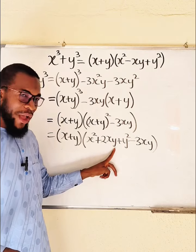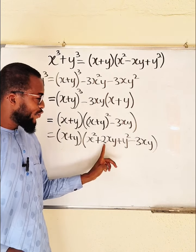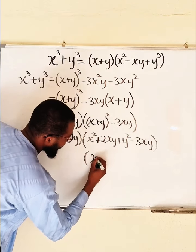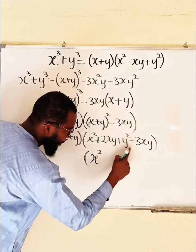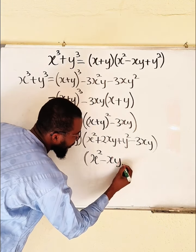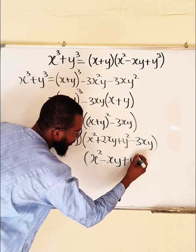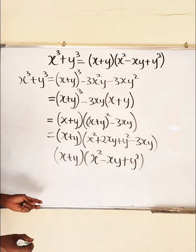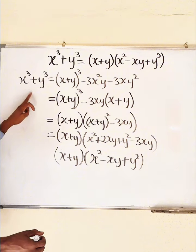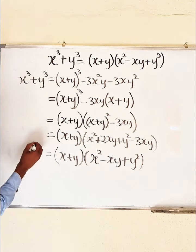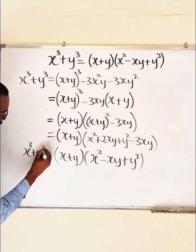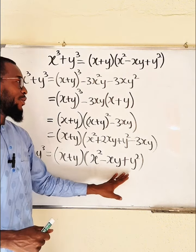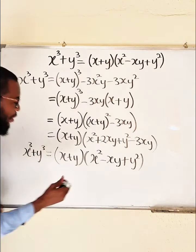You can see that 2xy and negative 3xy combine: two minus three is negative one. So this bracket contains x squared, and 2xy minus 3xy gives us negative xy, then we still have y squared. Don't forget the other bracket to the left — this is x plus y. We are still simplifying, because we have equals, equals, equals. This implies that x cubed plus y cubed is nothing but x plus y multiplied by x squared minus xy plus y squared — exactly the same as this, and hence proved.